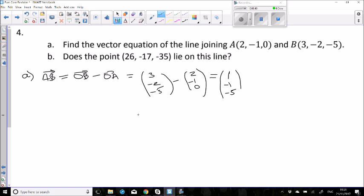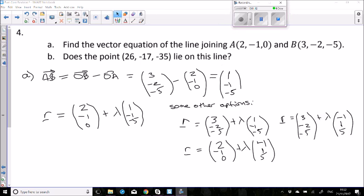Then the vector equation of a line is r equals a point, you can use A or B here, doesn't matter, plus lambda times our direction vector. Now there's many, many options here, so just because you've got something different to the answers, don't assume it's wrong. I've just listed some of the other options here.